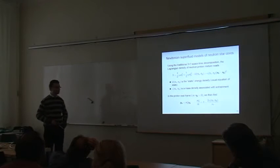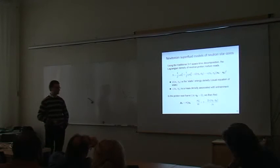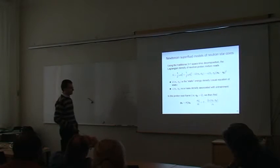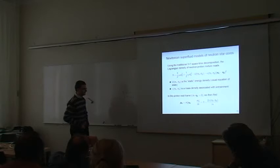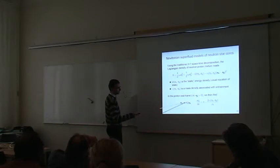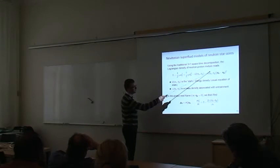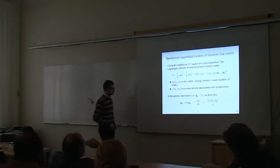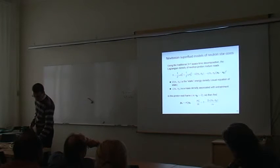How does entrainment appear? We can just use the full machinery that was discussed last week by Greg Comer, and we can calculate the momentum of neutrons and protons. What we find is that in general there is an effective mass here which appears, and which directly depends on this new function. The question now is what can we say about this coefficient?